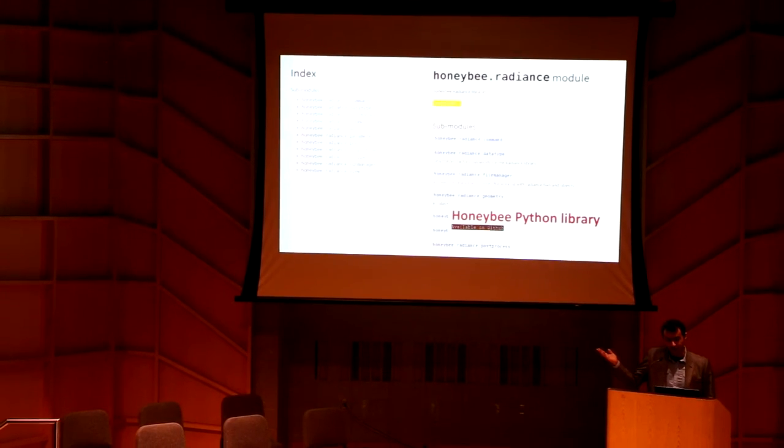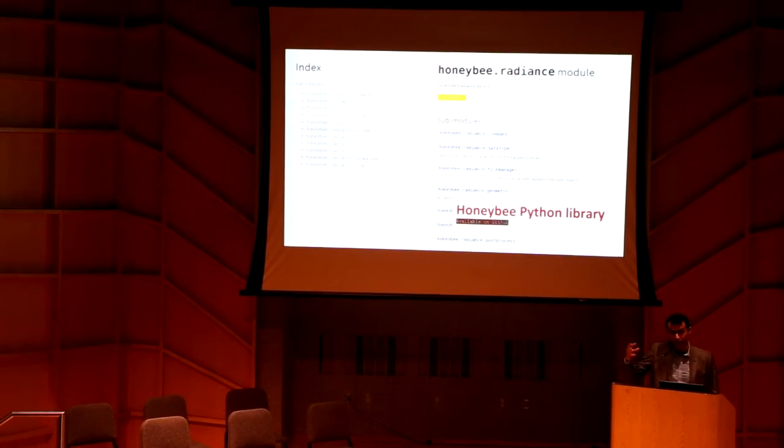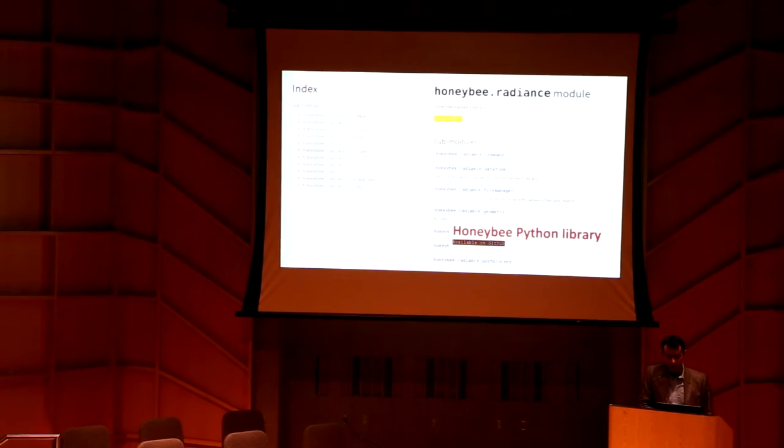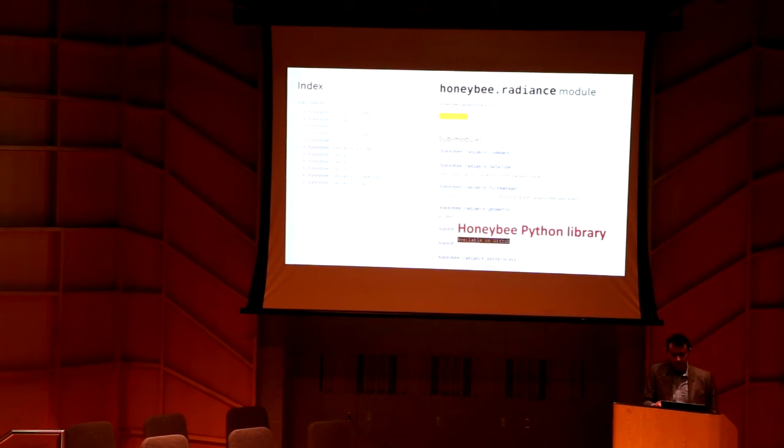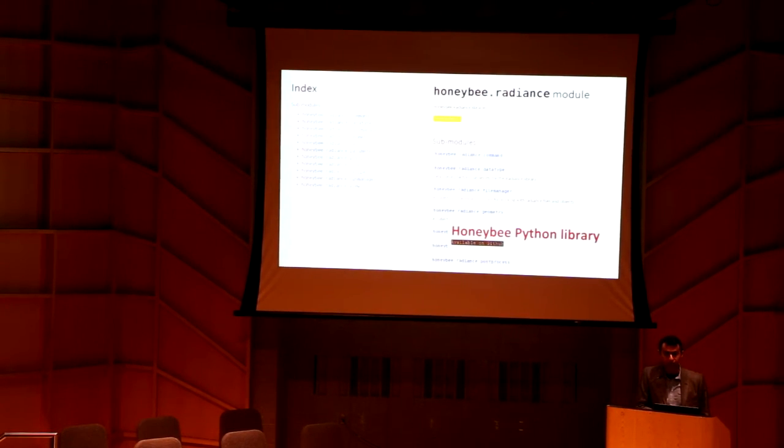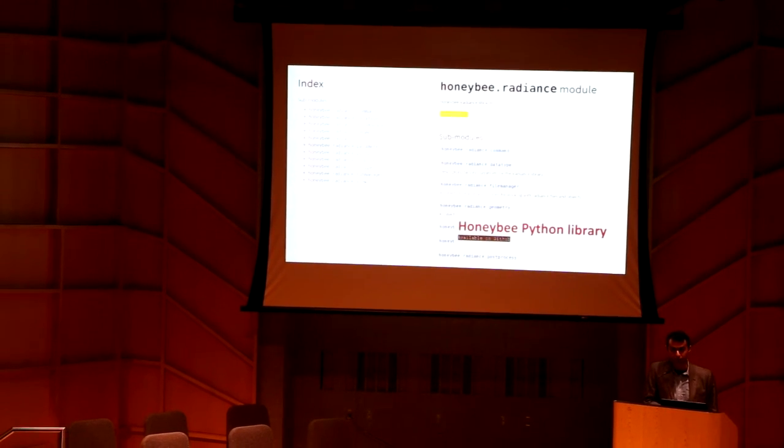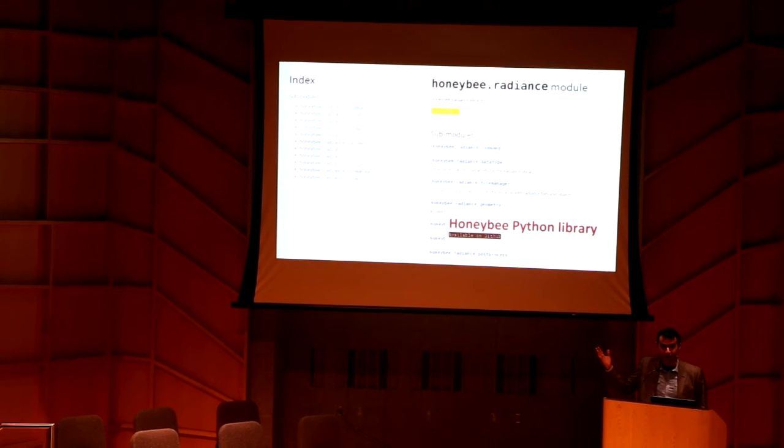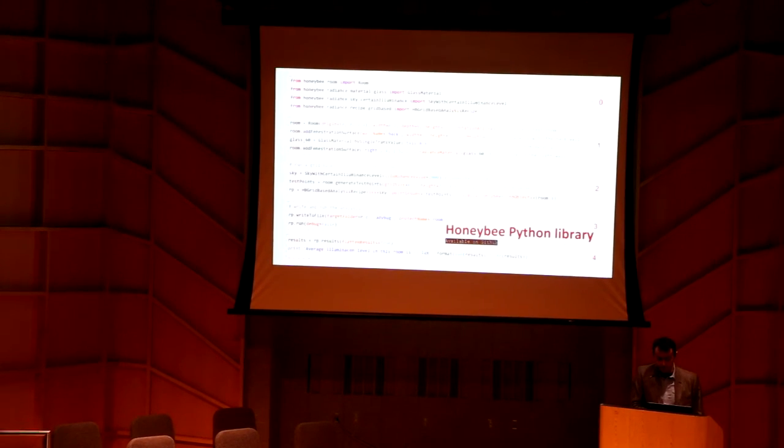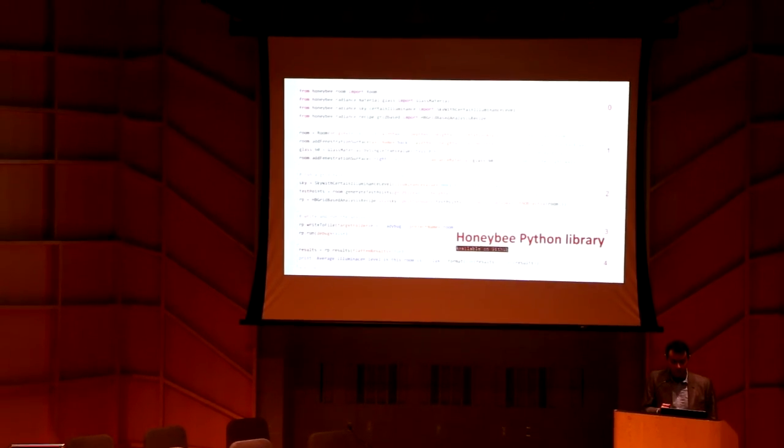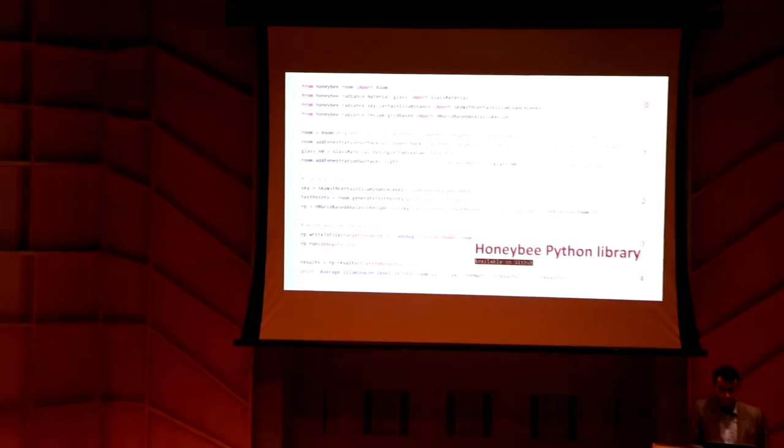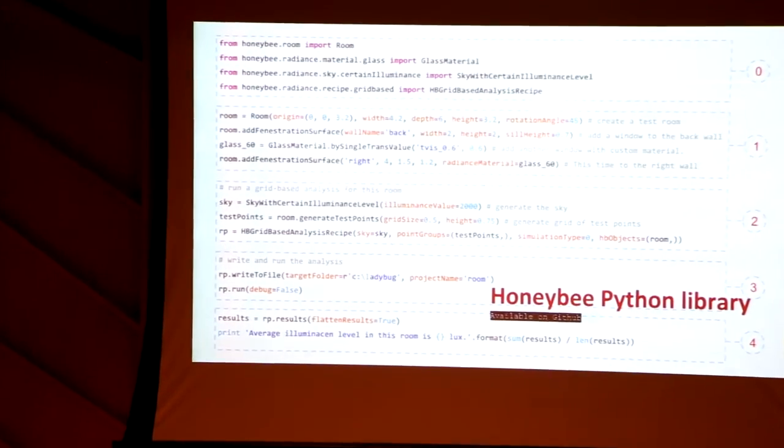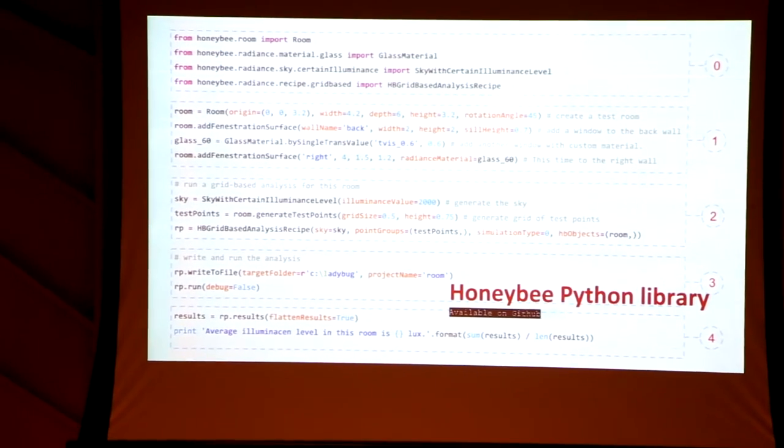As I said, there's a Python library that makes all these things work. This is the Honeybee one. There's an API documentation that gets generated from the code we write, so you can check this and create your own stuff very fast. This means what Byron has done is now like 10 lines of code. Here's an example - these are the lines you need to write. If you run this in Python, Grasshopper, or Dynamo...